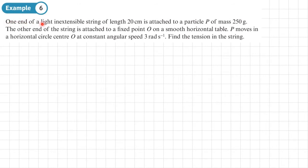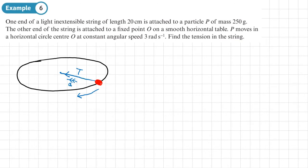Example 6: one end of a light inextensible string of length 20 centimeters is attached to a particle P of mass 250 grams. The other end is attached to a fixed point O on a smooth horizontal table. P moves in a horizontal circle centered at O at a constant angular speed of 3 radians per second. Find the tension in the string. Here's a diagram — this is a slanted side-on view, not the view from the top.